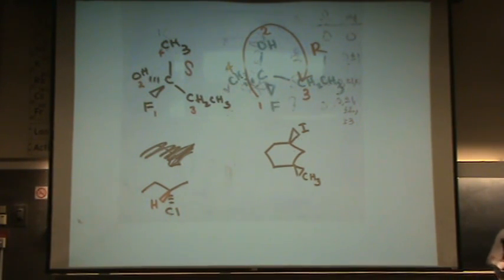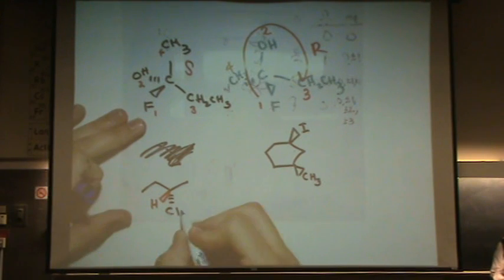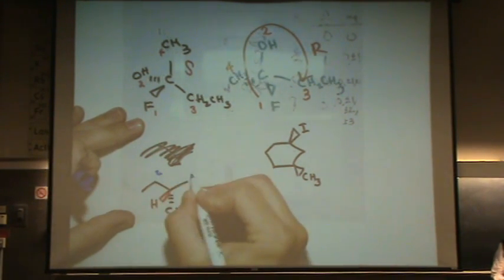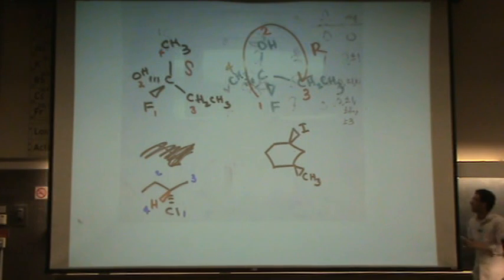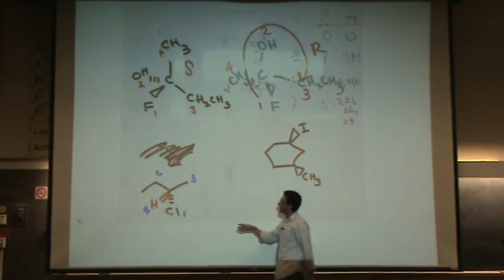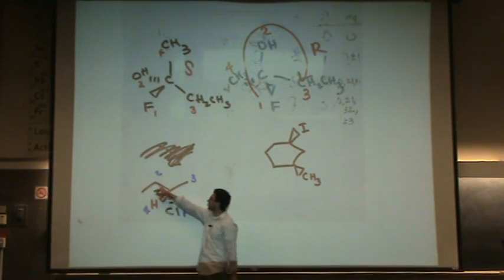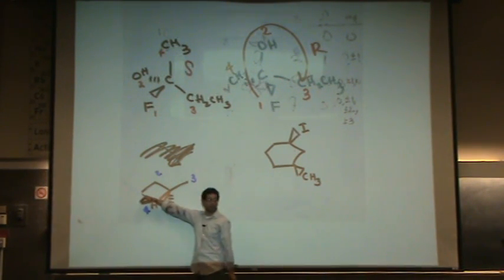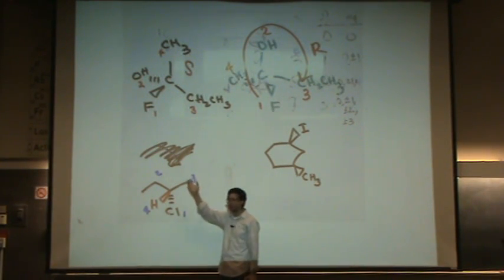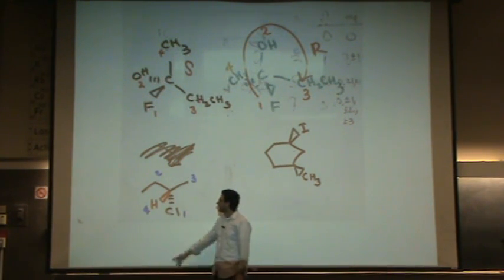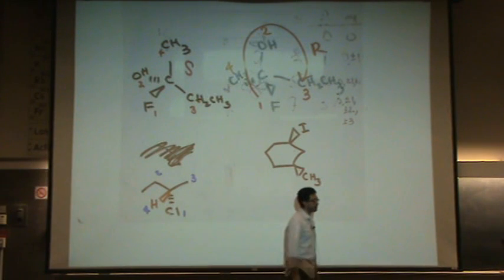Let's put the priorities here: one for chlorine — it's the highest; two for the ethyl, because it's bonded to another carbon; three for the methyl, it's a carbon but with only hydrogens on it; and four for the hydrogen, the least priority.